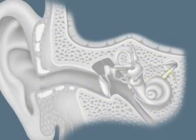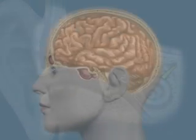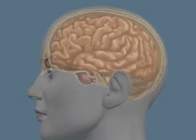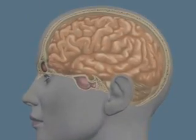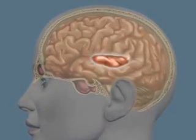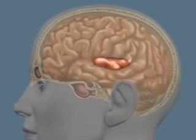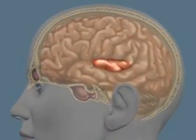These impulses are transmitted by the cochlear nerve to the cerebrum, where the sounds are analyzed in the auditory cortex.